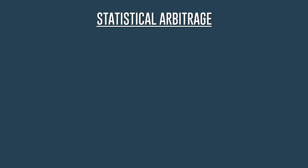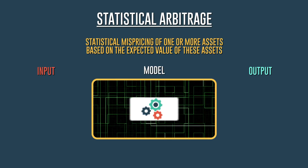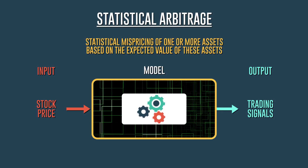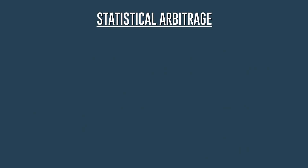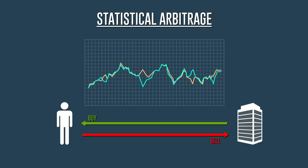Statistical arbitrage, or StatArb, is related to the statistical mispricing of one or more assets based on the expected value of those assets. StatArb is also a subset of mean reversion strategies. As a trading strategy, it is a heavily quantitative and computational approach to equity trading. One of the most common StatArb strategies is pairs trading, where a pair of co-integrated assets is considered — the underperforming asset is expected to rise and is bought, while the outperforming asset is expected to decline in value and is sold.